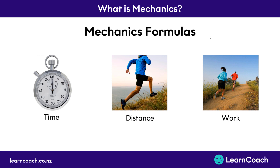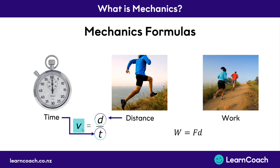The other thing that confuses people are mechanics formulas, which can be quite scary if you've never seen them before. I'm talking about things like V equals D over T, or W equals FD. A physics formula is just a way of relating these physics concepts together. For example, if we know the time that we ran for and the distance that we ran, we can work out a new physics concept which is speed, represented by the letter V — so how fast we ran. If we knew the force we ran with and the distance we ran, we could calculate the work it took. If you have no idea what these formulas mean, don't worry — that's our job to teach you how to use them, what they mean, and how to answer questions. All you need to know for now is that mechanics formulas are just ways of linking these physics concepts together.